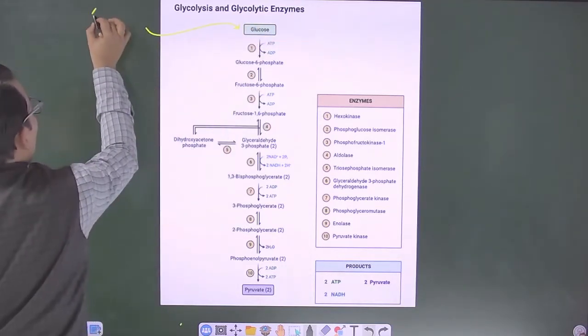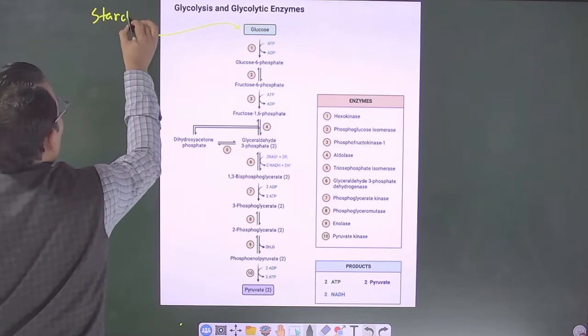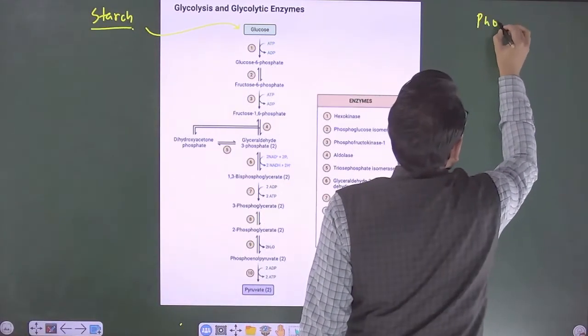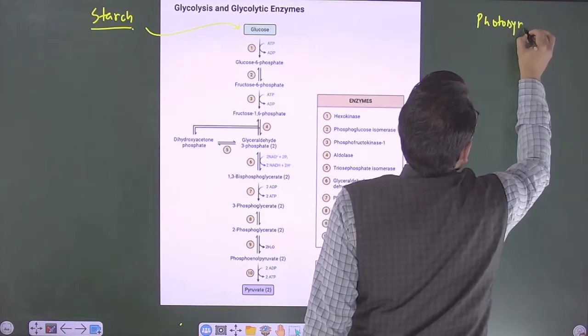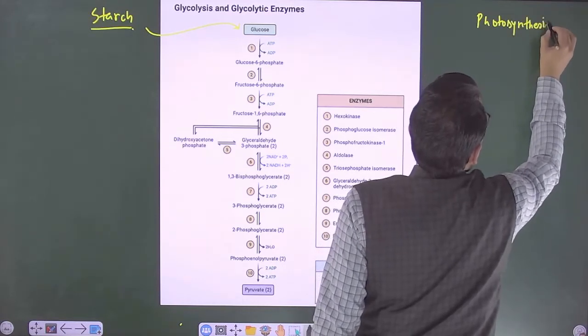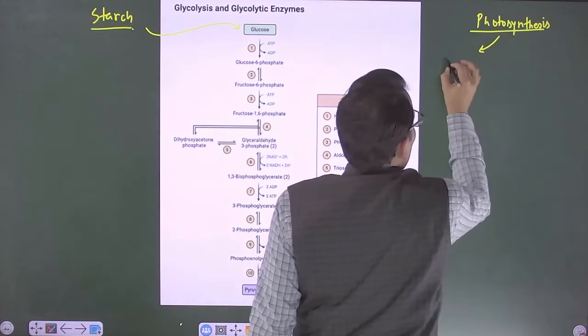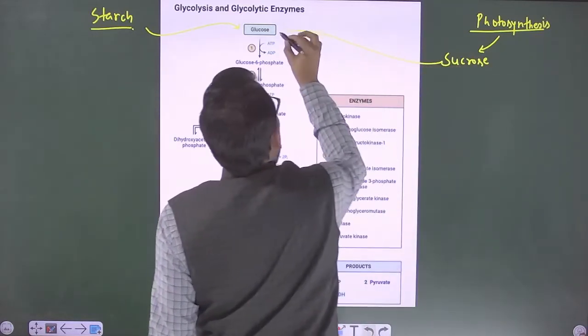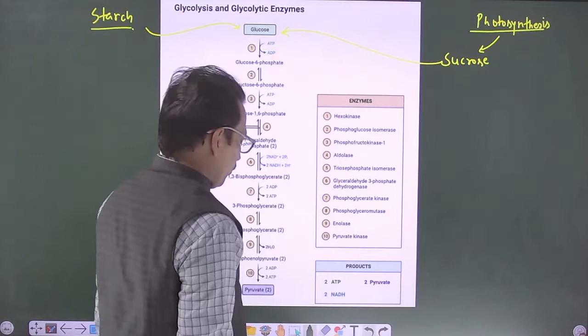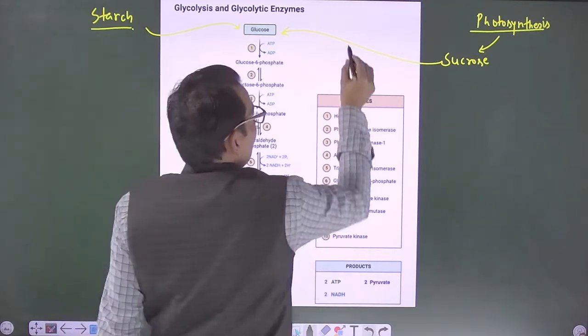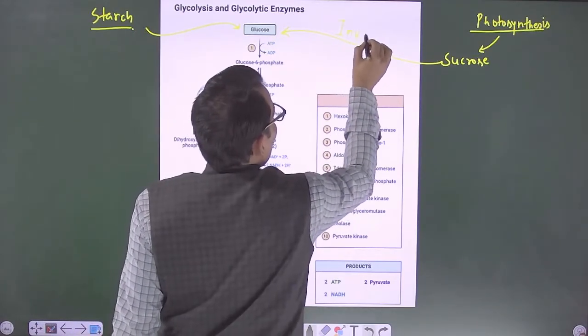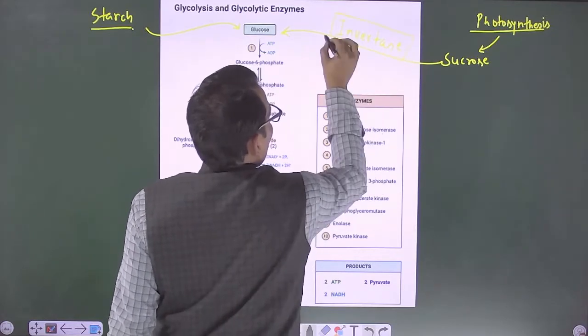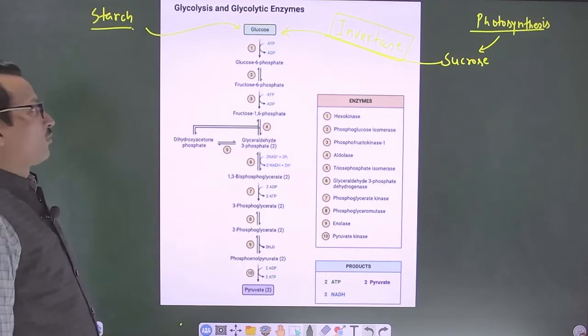First is from starch and second is from photosynthesis we can obtain sucrose and that sucrose can produce glucose by enzyme invertase. You may see that enzyme that is called as invertase, with the help of this enzyme you can get glucose.